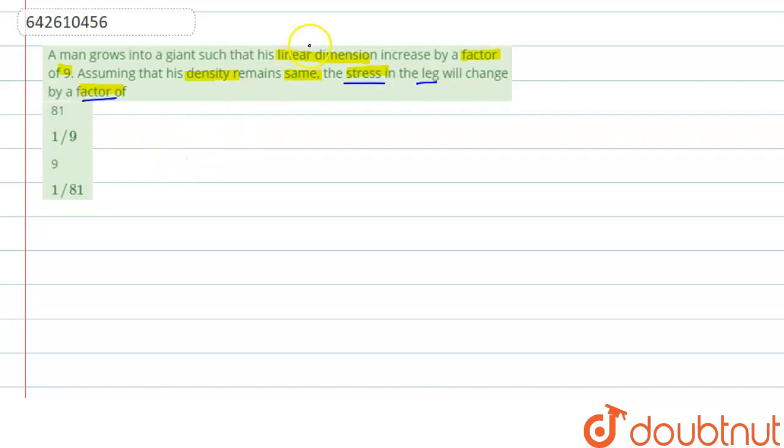If we write the linear dimension, let's say this is L, so initial linear dimension will be L1 and final L2, but here it is given that it is changing by a factor of 9, so this will be 9 of initial.